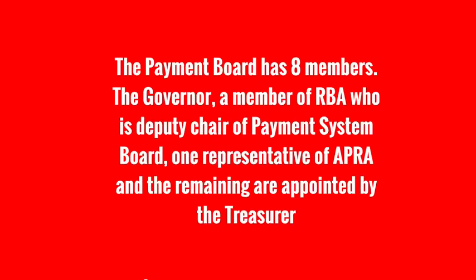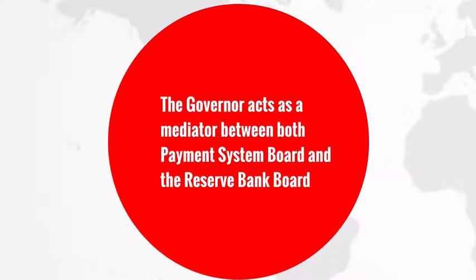The Payment System Board is made up of eight members: the Governor, a member of the RBA who is the Deputy Chair of the Payment System Board, one representative from the Australian Prudential Regulation Authority, and the remaining members are appointed by the Treasurer. The Governor acts as a mediator between the Payment System Board and the Reserve Bank Board, and is usually the one who has the final vote.